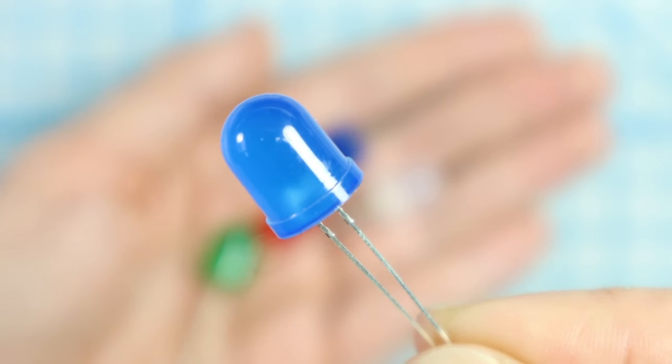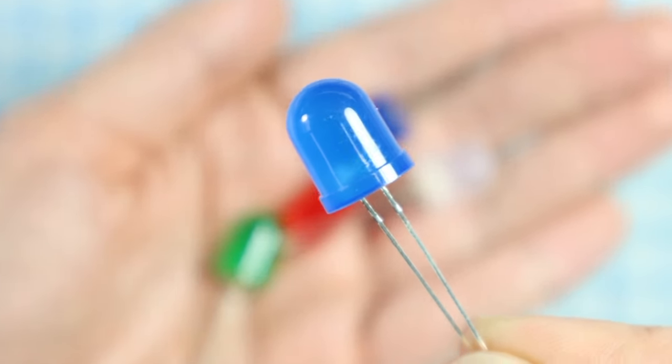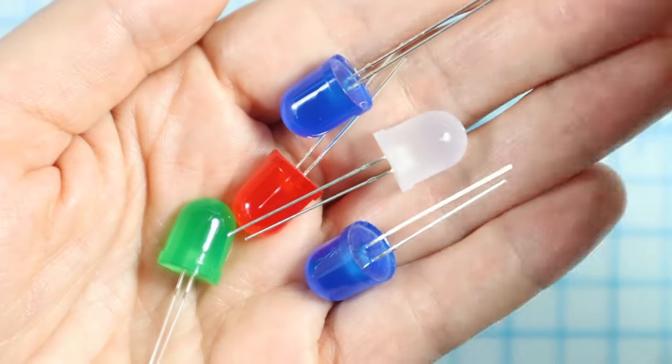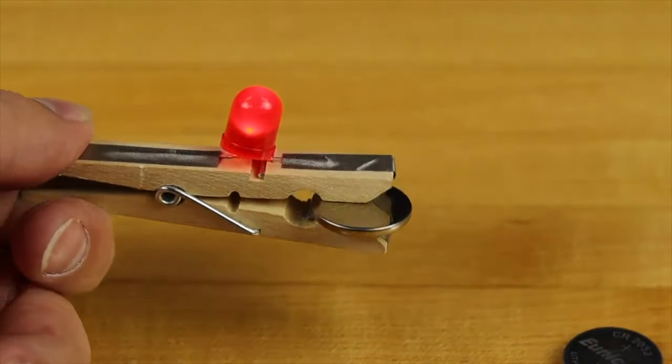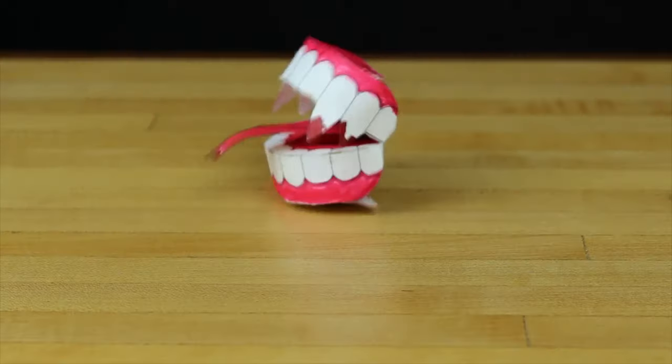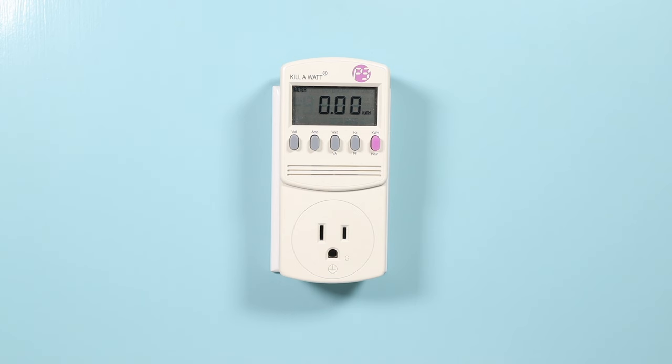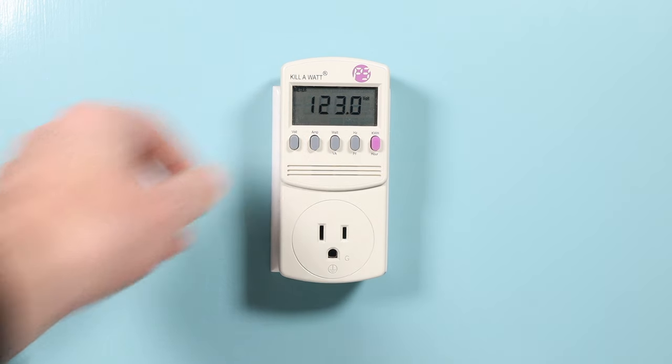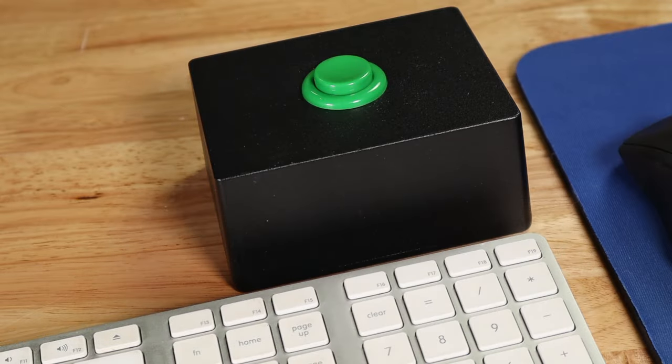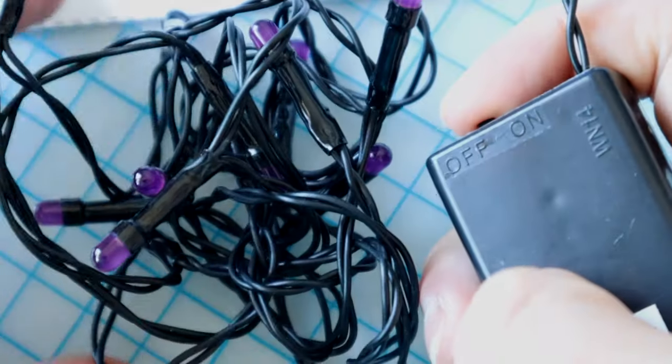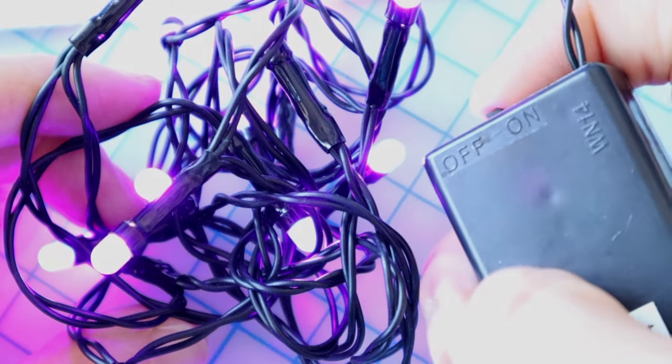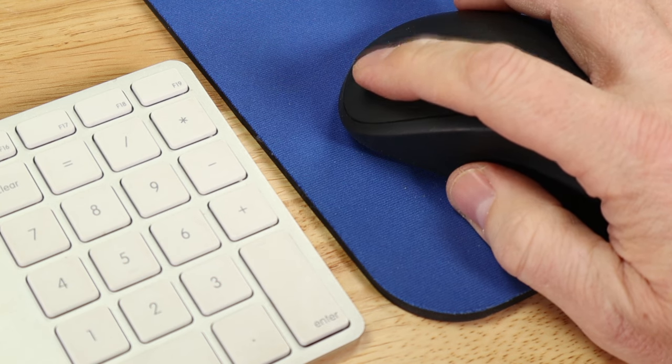The output of a circuit is what it does. The example circuits in this video use LEDs as the output, so they light up. Other circuits could vibrate, make noise, or move around. Inputs are ways to interact with a circuit, like buttons and switches. Yes, you can have a circuit with no input, but a string of lights is way better with a switch. Inputs add interactivity and control.